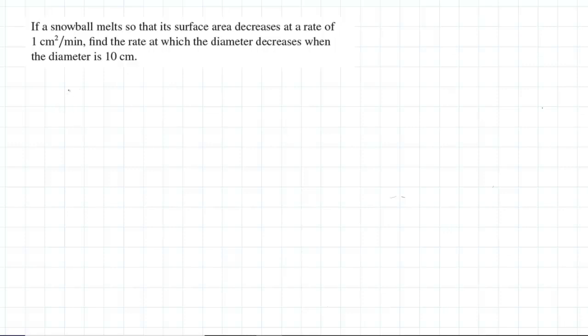We could begin solving this question by introducing some notation. Let S represent the surface area of this melting snowball. We can also let D represent its diameter, and finally, we can let R equal the radius. Those are just some variables to represent our quantities of this problem.